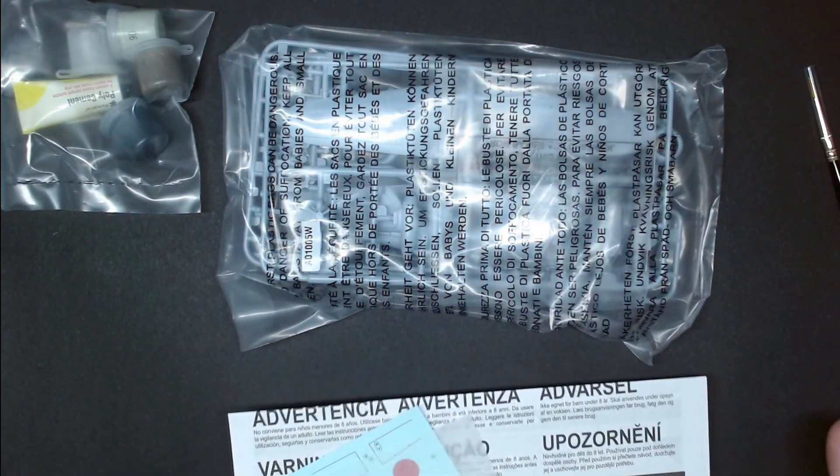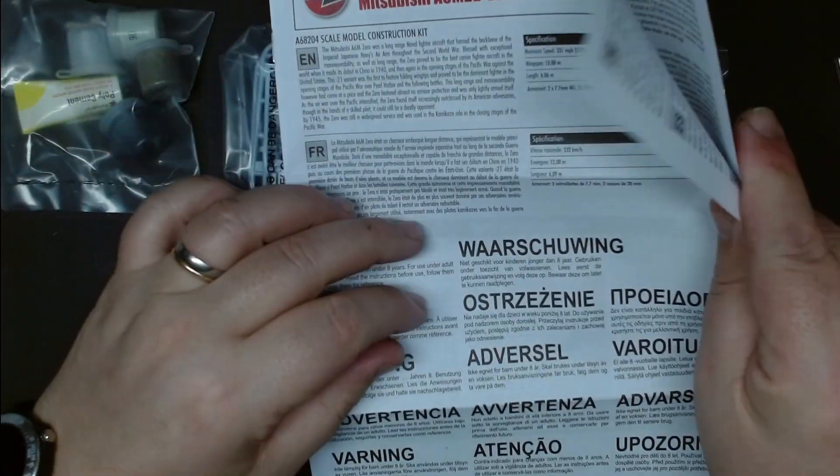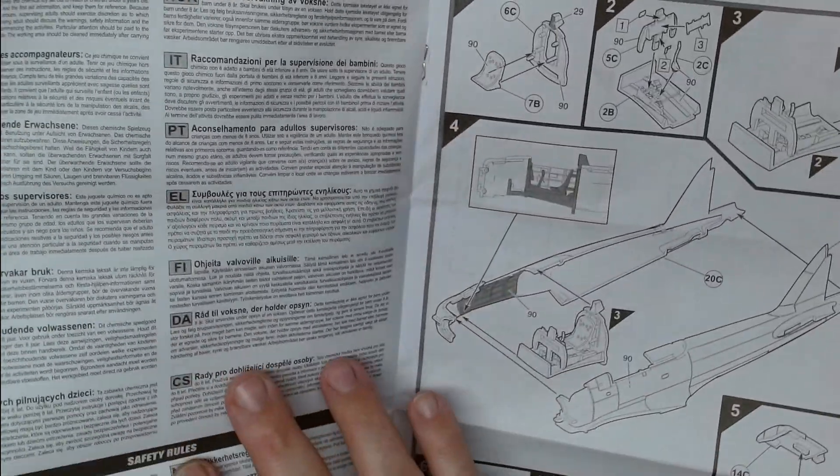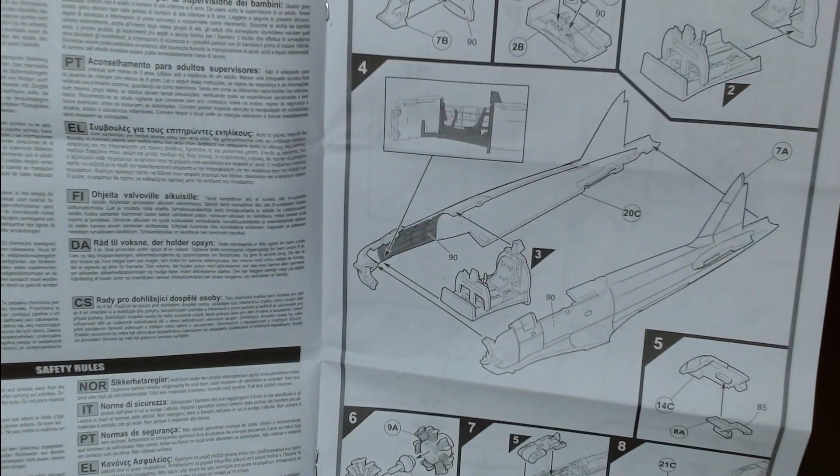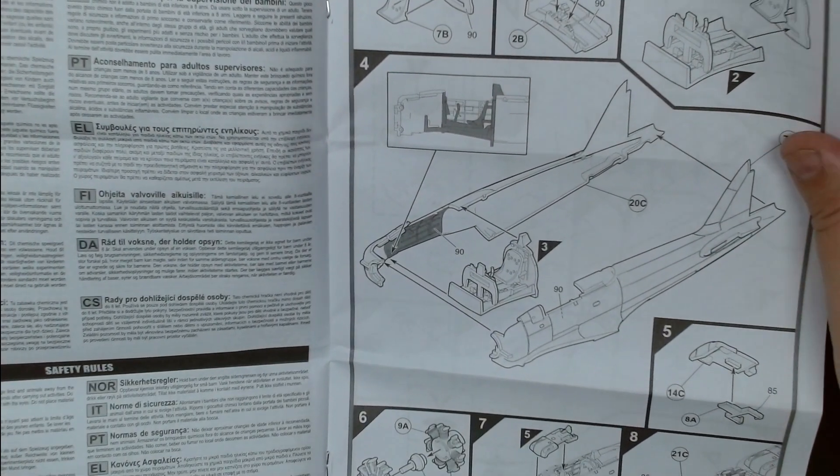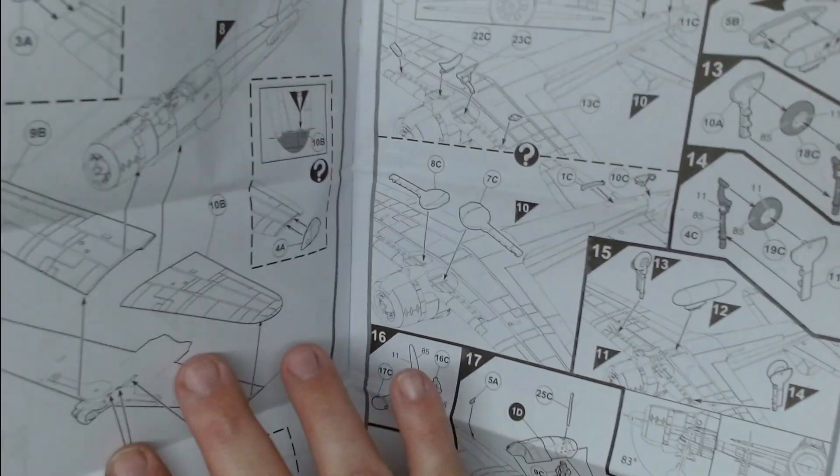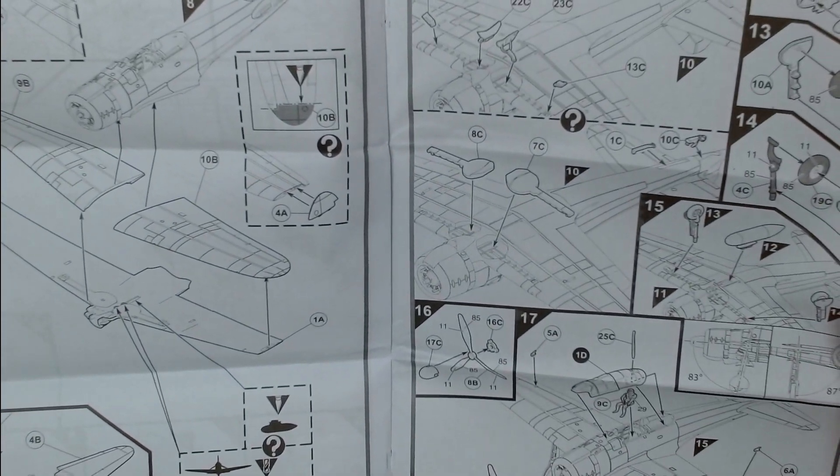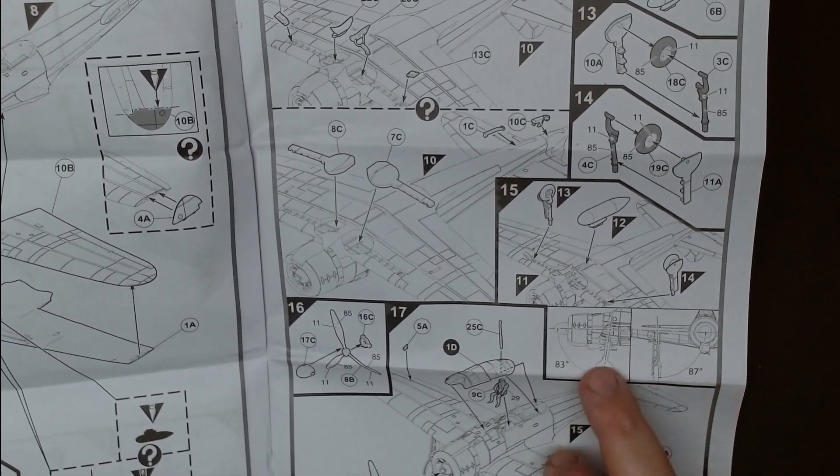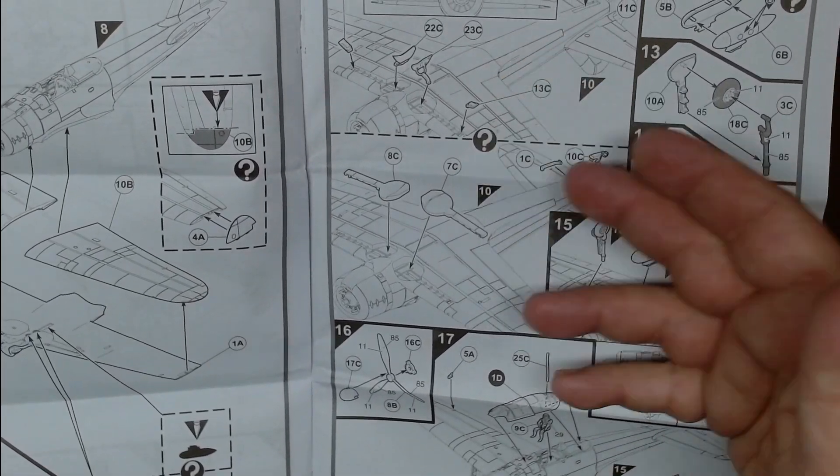Starting with the instructions, they are good old Airfix style, an A4 booklet style. They are pretty straightforward, there's not many pieces on this model so we should be absolutely fine. They are not over complicated as you can see, and we can build the airplane in 17 steps so we should be fine. It gives you the angles as the wheels should be.